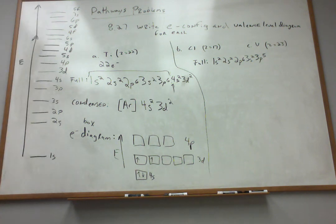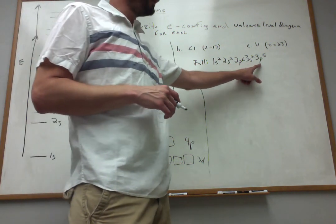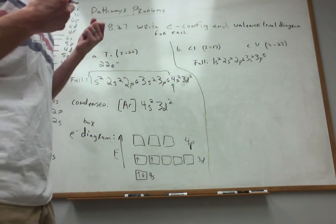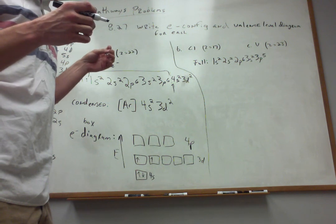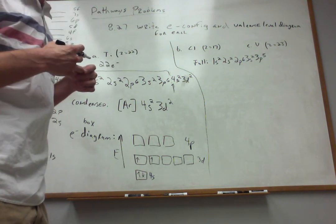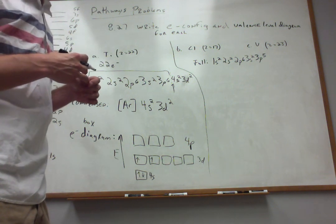We've almost got that 3p level full, but not quite. That's actually why chlorine atoms are pretty reactive — there's a vacancy in the 3p level, and if it can grab one more electron, it fills up that shell. Filling the 3p shell imparts stability to the atom, which is why chlorine tends to grab electrons from other things.